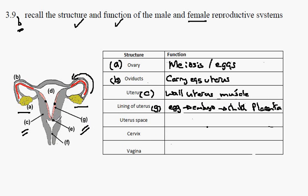Sperm cells enter the uterus through the cervix, which is labeled E. This is the entrance to the uterus known as the cervix, and it's in this space that sperm cells will make their way up to the oviducts.